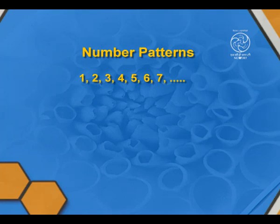Now we will see some number patterns. Here we have 1, 2, 3, 4, 5, 6, 7, and so on. First it starts from 1 and increases by 1 each time. The difference between each of the terms is 1. So we know that it is the pattern of natural numbers.